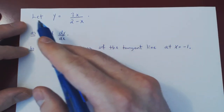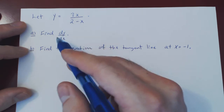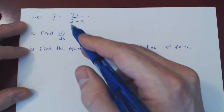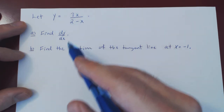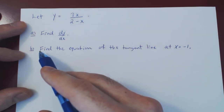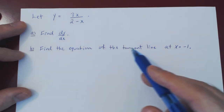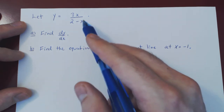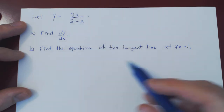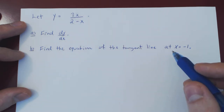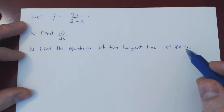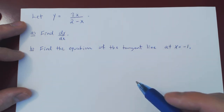Here's an example of finding the derivative of a rational function, and then finding the equation of the tangent line to the function at the value x equals negative 1.